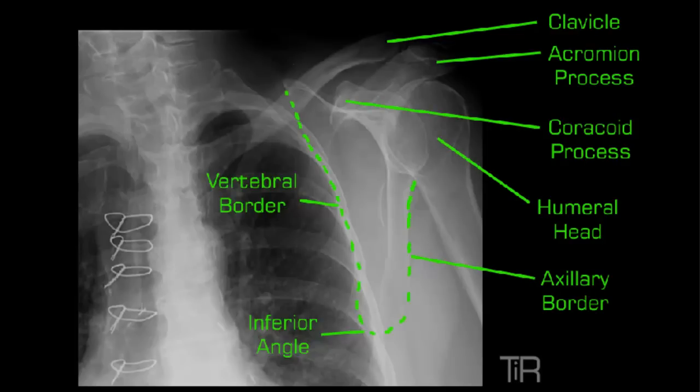Let's talk about determining the proper amount of rotation for a Y-view shoulder. Typically I will just rotate the patient about 45 degrees. I can use a sponge whether supine or upright. A 45-degree wedge sponge will give you that exact angle, as long as the humerus is hanging straight down by the patient's side. Typically that will cause the humerus and the scapula to be rotated just enough to project it away from the ribs.